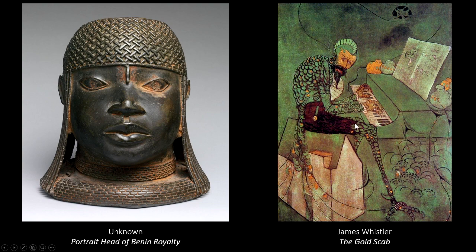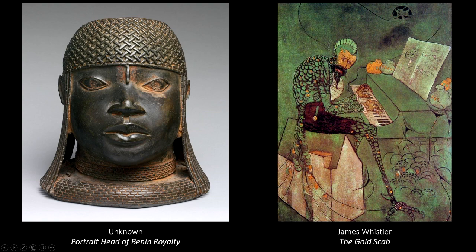Now over here in this painting by James Whistler, this guy — I have no idea what this scaly creature is doing playing the piano. It looks like something from Halloween. He's sitting on top of a house. He looks like if you touched him, he'd be kind of scaly and either really dry and rough, or maybe kind of slimy like a fish. So that's another implied texture by James Whistler.